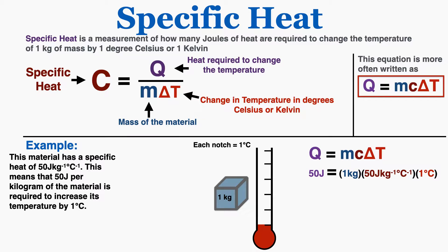This lecture is about specific heat and how to use the concept in equations. Specific heat is a measurement of how many joules of heat are required to change the temperature of 1 kilogram of mass by 1 degree Celsius or 1 Kelvin. Remember that those changes are the same.